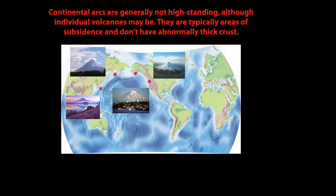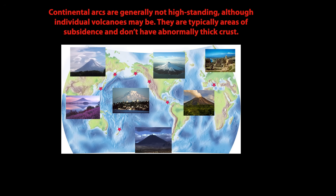Japan, where strato-cones and calderas sit near sea level throughout the islands. The North Island of New Zealand, where the Taupo Zone sector of the arc is actively extending as calderas and stratocones erupt. The Central American arc, where volcanoes are aligned in a long linear low-standing depression. Of course, the Campanian volcanic arc of Italy, with Mount Vesuvius located on the Gulf of Naples. And I left out the Hellenic arc, where volcanoes like Santorini form islands in the Aegean Sea.